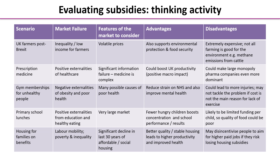Housing for families on benefits: the market failures are labour mobility, poverty, and inequality. There has been a significant decline in the last 30 years of affordable or social housing, so these people are finding themselves more and more immobile. The advantages of subsidising better quality housing would be more stability, higher productivity, and much improved health for these individuals. However, it may disincentivise people from aiming for higher paid jobs if they risk losing those housing subsidies — they may well choose lower paid jobs to retain the house.